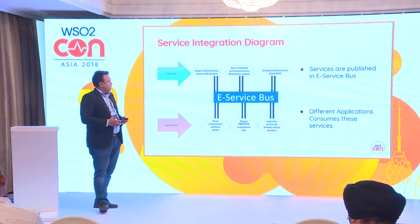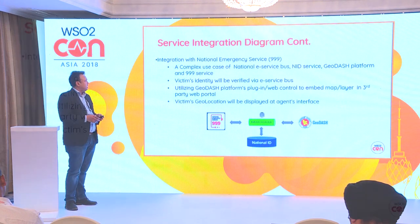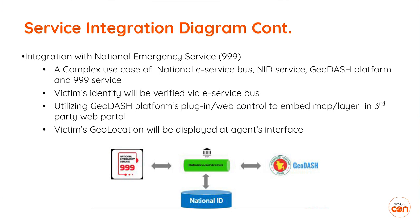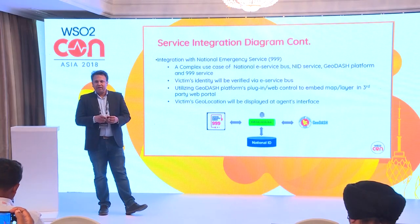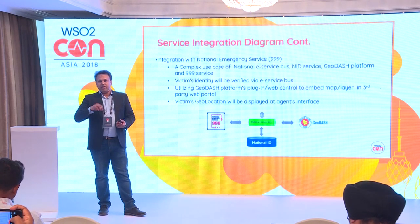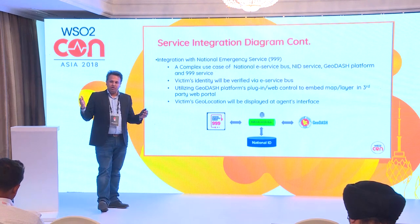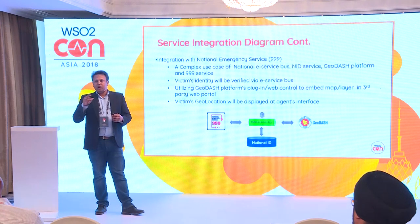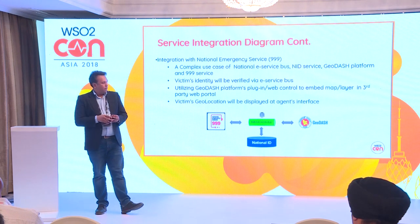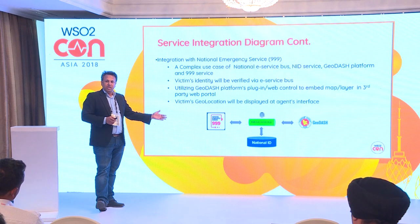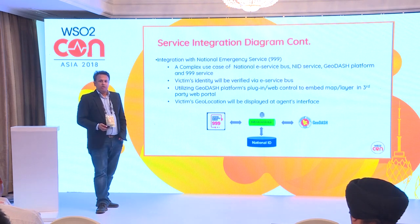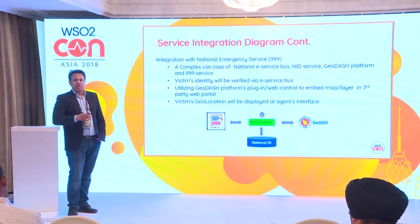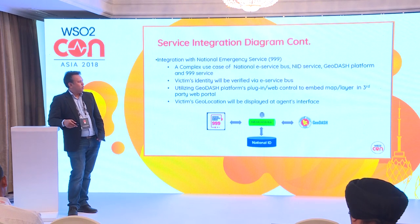In the next three to four months, Bangladesh's 999 emergency service — where victims can call the police — will be integrated with GeoDash, so the police department can see the precise location of victims and respond to emergency calls. GeoDash will also be connected with the national identification database so police know exactly who the victim is. We hope to have a strong relationship with WSO2 to connect all e-services. Thank you very much.